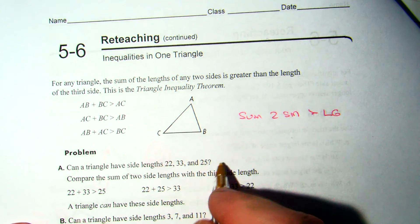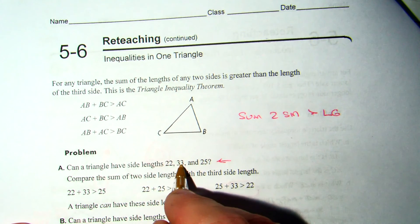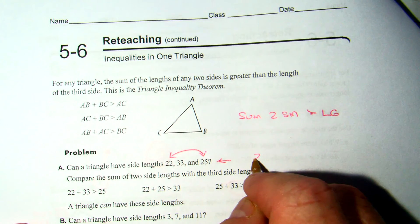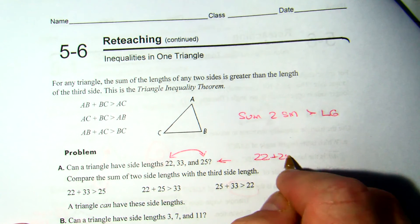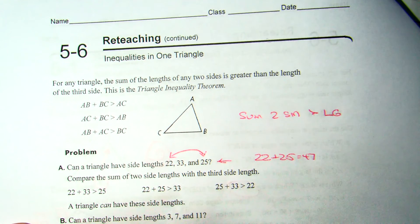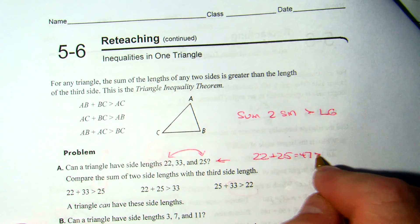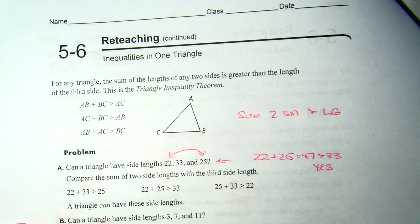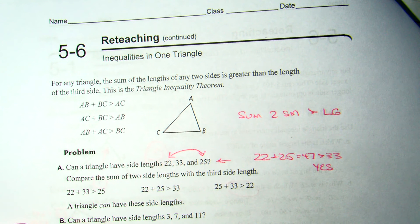So if I look at letter A, I've got three numbers: 22, 33, and 25. I take the two smallest numbers and add them up. 22 plus 25 equals 47. Since 47 is greater than 33, yes, that is certainly able to be a triangle.